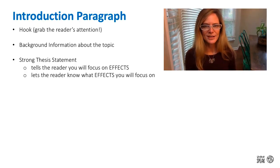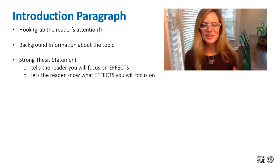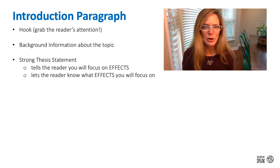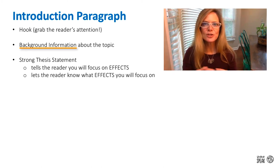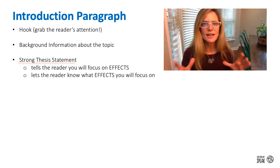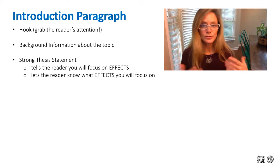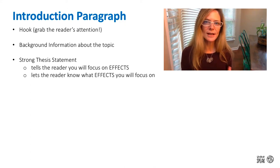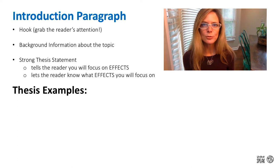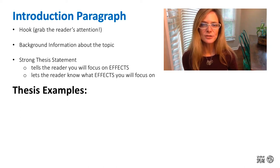The first paragraph you're going to write is your introduction paragraph. Your first sentence is your hook — that's when you grab your reader's attention, say something interesting to pique their curiosity and make them say, 'I'm definitely going to read this paper.' Then you want to give a little background information about your topic, and then you need a really strong thesis statement. For a cause and effect essay focused on effects, you want to tell the reader first and foremost that you're focusing on effects, and let the reader know what those effects will be.